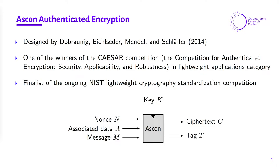At a very high level, the ASCON authenticated encryption takes as inputs a secret key k, public parameters, nonce n, associated data, and a message m. It then outputs a ciphertext c whose length equals the length of the message, and then an authentication tag t. The tag t provides integrity and authenticity for all the input public parameters.